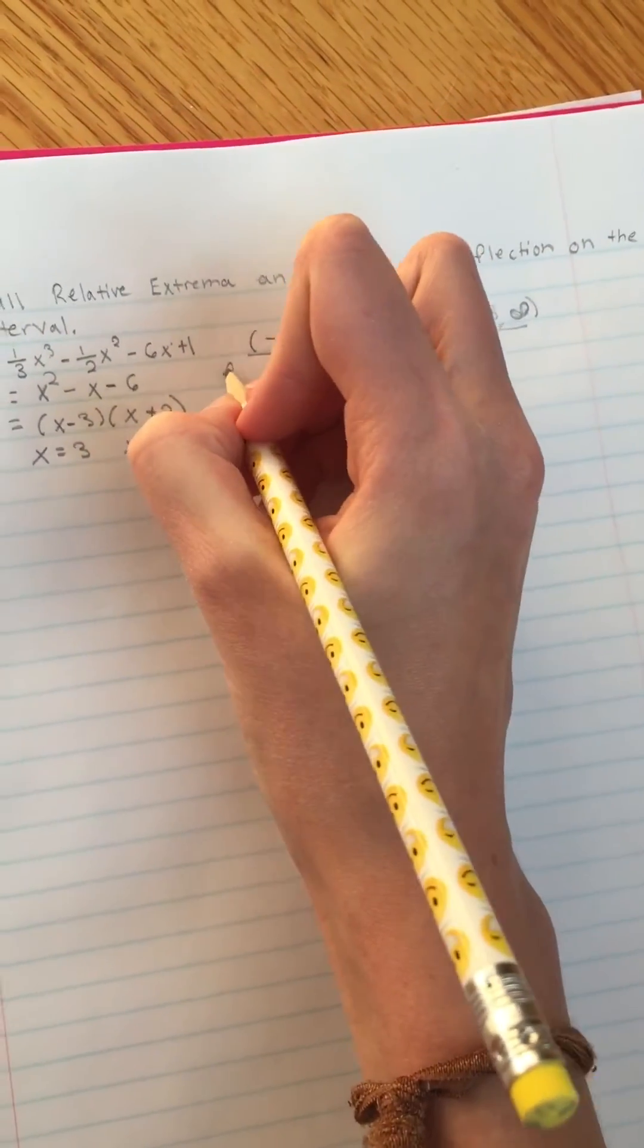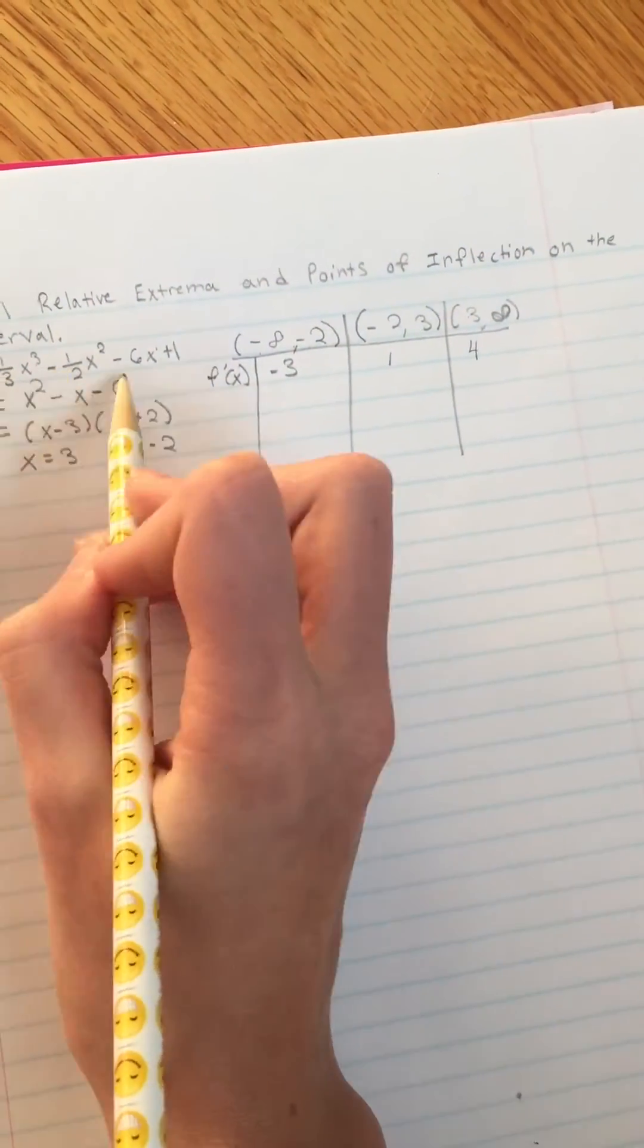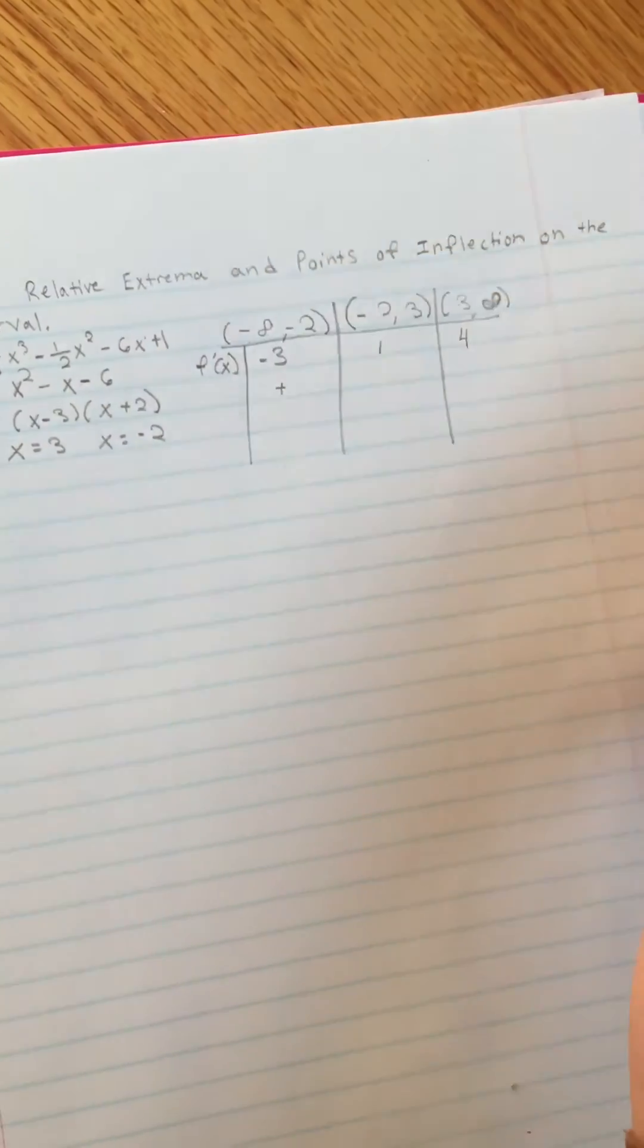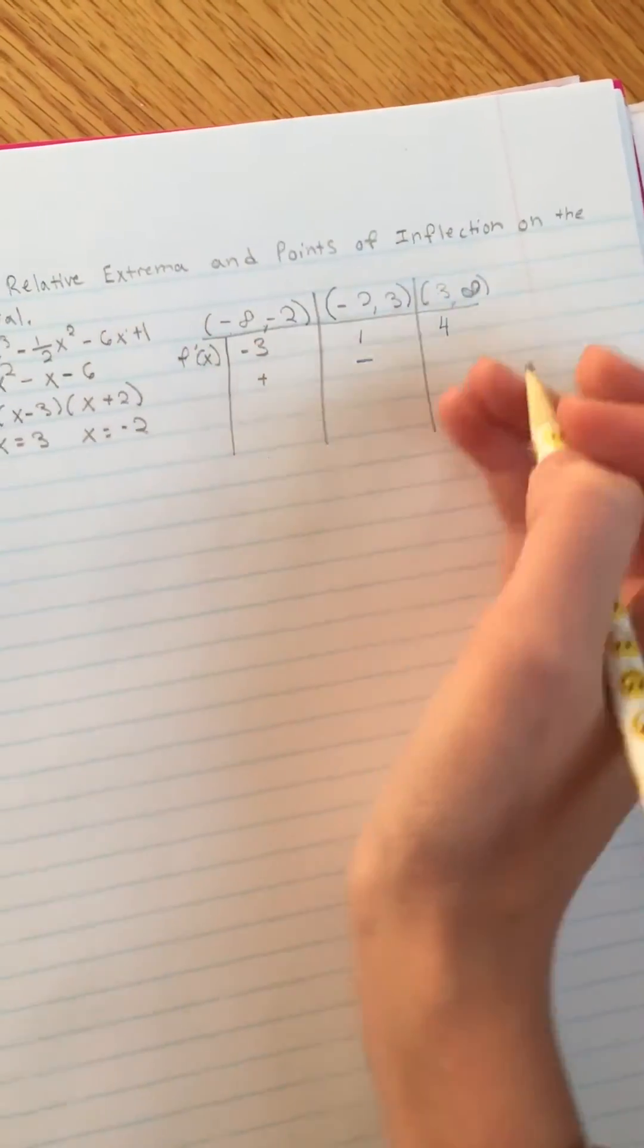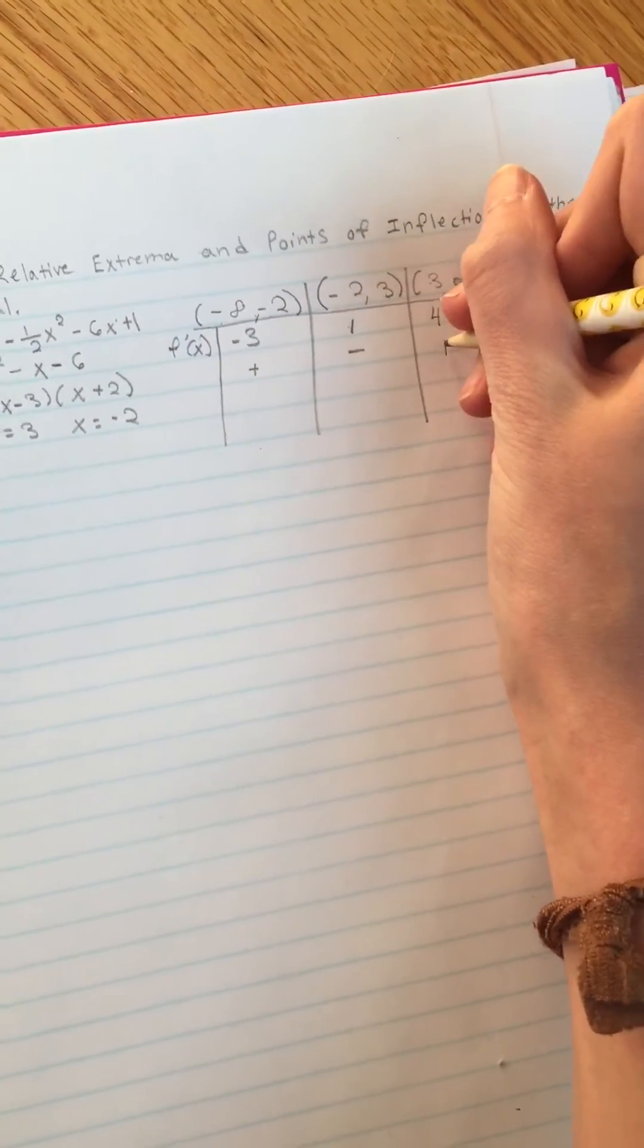Now we are going to plug these back into the derivative. So when you plug negative 3 into the derivative equation here, we are going to get a positive number. You don't need the actual number, just the value. When you plug 1 in, you're going to get negative, and when you plug 4 in, you're going to get a positive number.